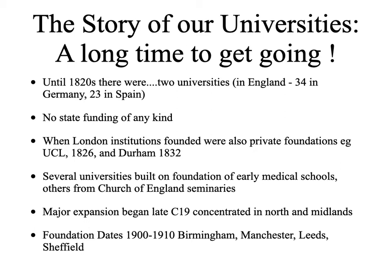Let me take the story right back to the 1820s, when there were two universities in England — no prizes for naming them. At that stage, England was actually a long way behind some other European countries. Back then, 200 years ago, two universities in England, but 34 in Germany and 23 in Spain, and many other countries had significantly more higher education. Back then, of course, there was no state funding of any kind in the university sector. When University College London and then Durham were created in 1826 and 1832, the new universities that started to increase capacity were also themselves private foundations.